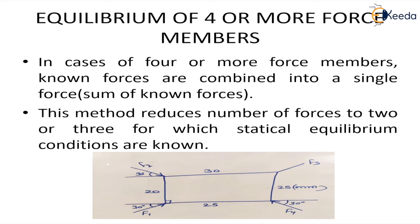For two force members, the forces should be equal in magnitude, opposite in direction, and along the same line of action. And for three force members, the three forces' line of action should pass through a point known as the point of concurrency, and all three forces' resultant is zero.